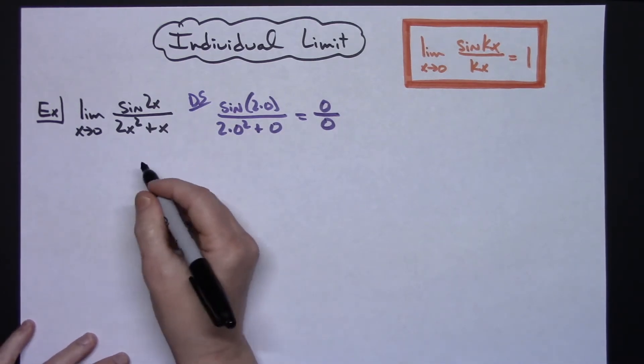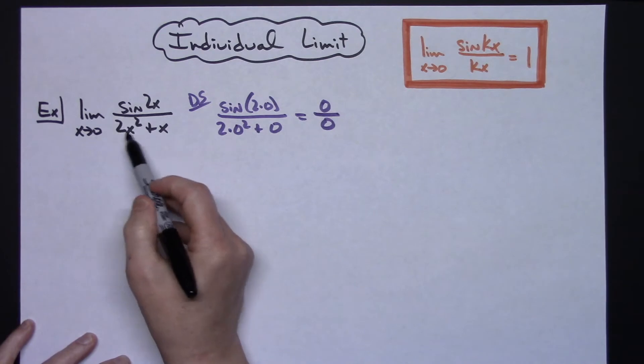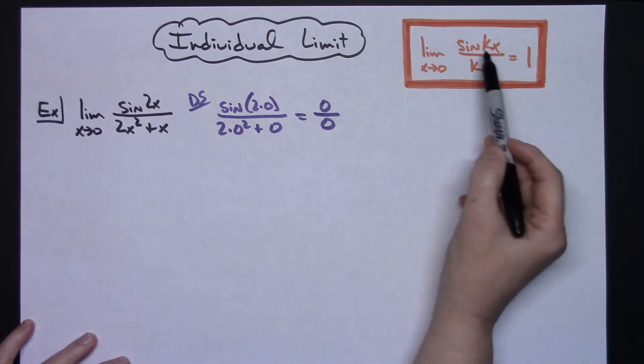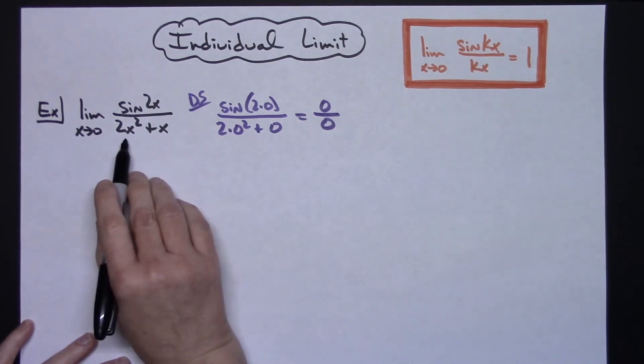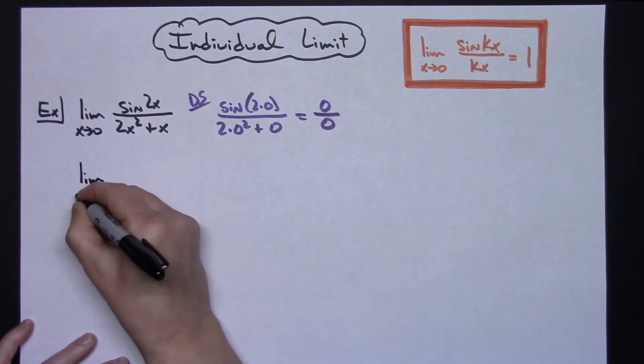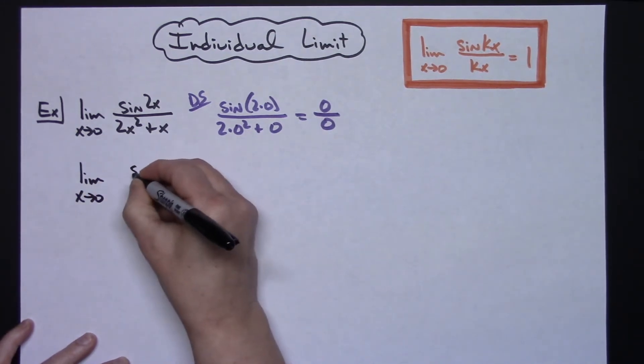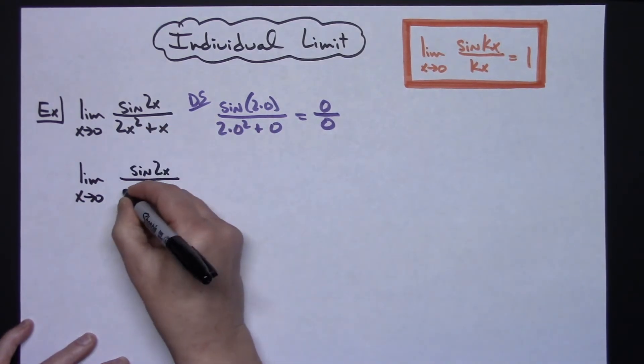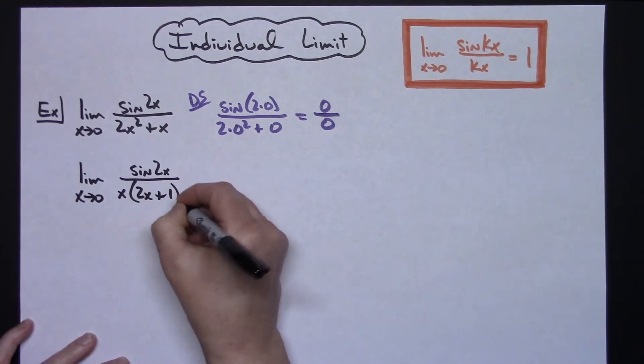So then what I have to do is figure out how I can go about manipulating this, hopefully to come up with a sine of, in this case, 2x over 2x. On the bottom, the first thing I'm going to see is I need to factor that. So I'm going to have the limit as x approaches 0 of the sine of 2x on top, and I'm going to take the x out of the bottom so x times the quantity 2x plus 1.